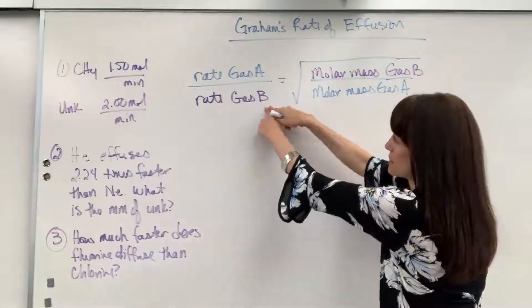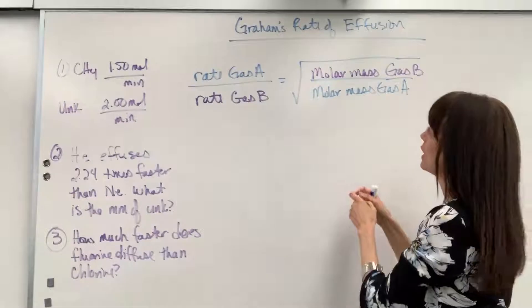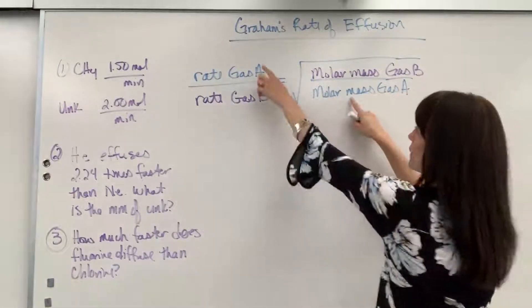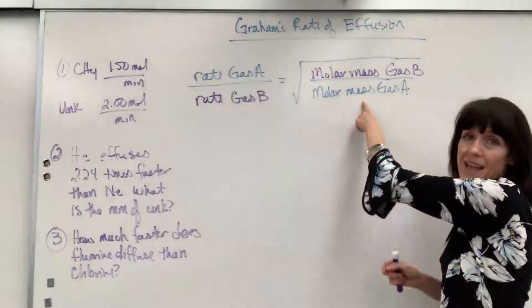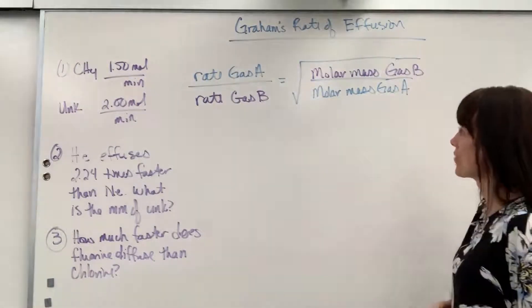So, rate of gas B is in the denominator, but on this side, the molar mass of gas B is in the numerator. That divided by the molar mass of gas A. And so, that's also flipped. It's on the opposite side of that fraction.